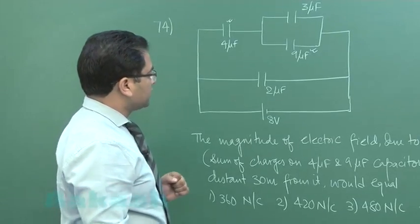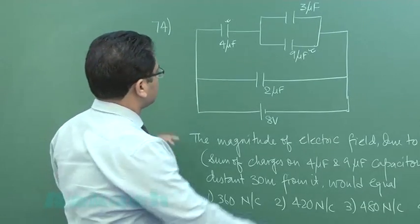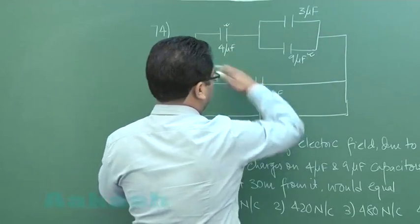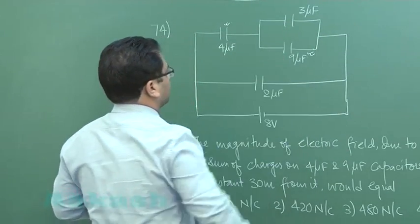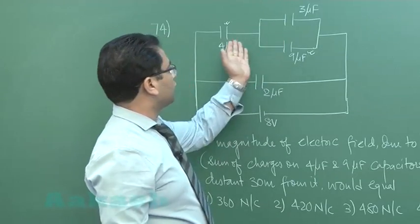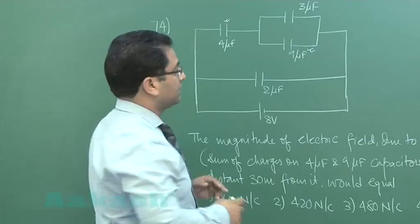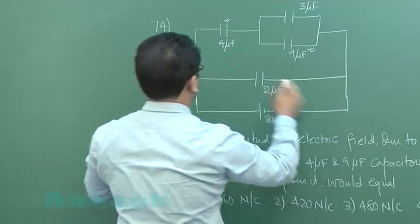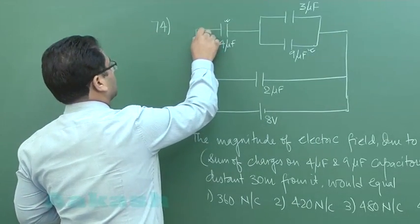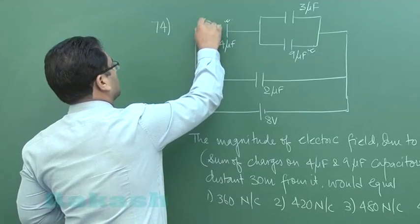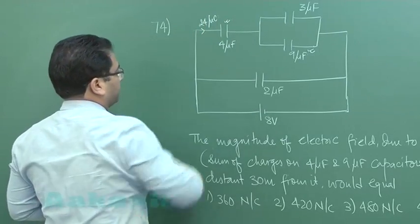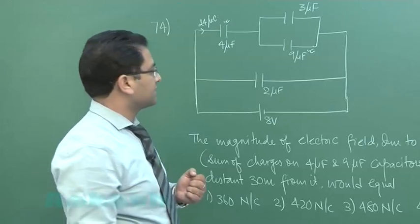For that, this unit is entirely independent with 8 volt. So 9 and 3 is in parallel, that is 12, and 12 and 4 in series, so that will be net 3 microfarad. So 3 microfarad and 8, so this charge here will be 24 micro coulombs. Q equals CV, that is quite simple.